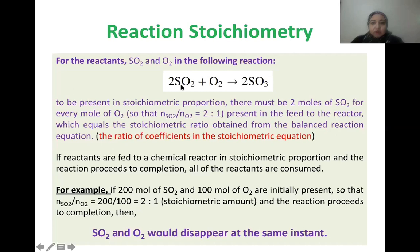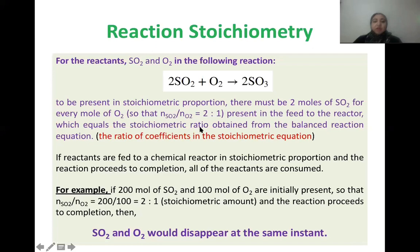What this reaction tells us is that two moles of SO2 should react with one mole of O2 to give us two moles of SO3. If we take the stoichiometric coefficient of SO2 (which is 2) and divide it by the stoichiometric coefficient of O2 (which is 1), we get what is called the stoichiometric ratio.